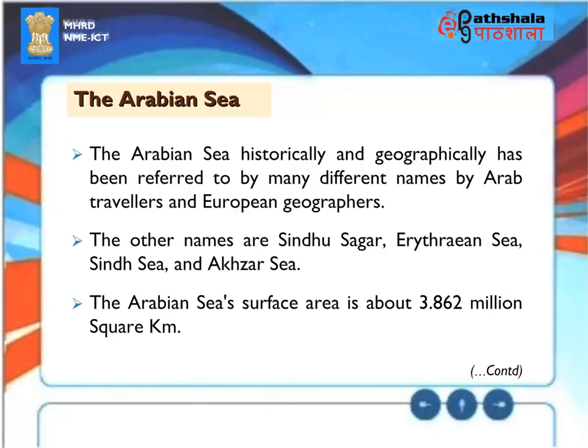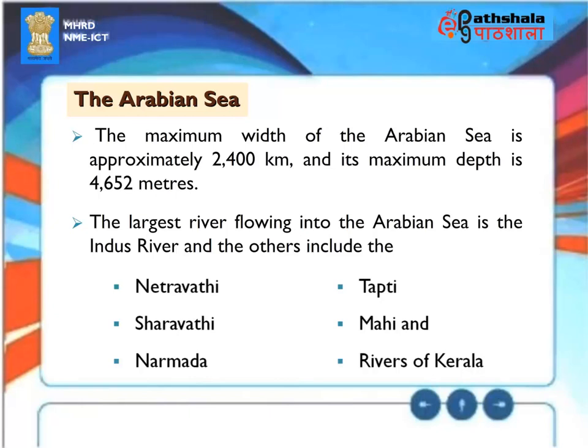The Arabian Sea. The Arabian Sea historically and geographically has been referred to by many different names by Arab travelers and European geographers. The other names are Sindhosagar, Erythraean Sea, Sindh Sea and Aqzar Sea. The Arabian Sea's surface area is about 3,862 million square kilometers. The maximum width of the Arabian Sea is approximately 2,400 kilometers and its maximum depth is 4,652 meters. The largest river flowing into the Arabian Sea is the Indus River and the others include the Netravati, Sharavati, Narmada, Tapati, Mahi and the rivers of Kerala.